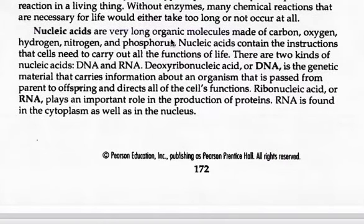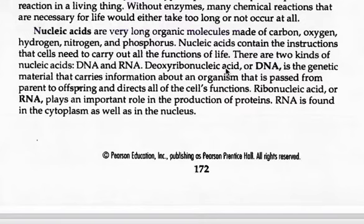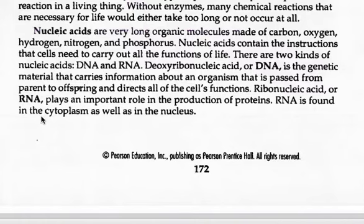Nucleic acids are very long, organic molecules made of carbon, oxygen, hydrogen, nitrogen, and phosphorus. Nucleic acids contain the instructions that cells need to carry out all the functions of life. There are two kinds of nucleic acids: DNA, which is deoxyribonucleic acid, and RNA. DNA is the genetic material that carries information about an organism passed from parent to offspring and directs all of the cell's functions. Ribonucleic acid, or RNA, plays an important role in the production of proteins. RNA is found in the cytoplasm as well as in the nucleus.